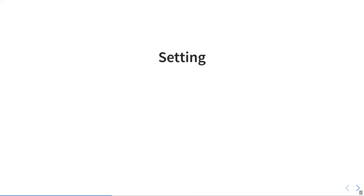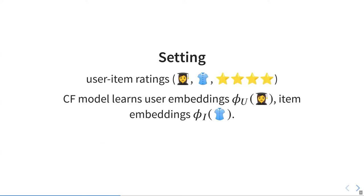To briefly describe the setting, first of all, we assume we have user item ratings. This user previously rated this button down shirt with four stars, for example. We assume we have some collaborative filtering model that learns a user embedding function phi u and an item embedding function phi i. This collaborative filtering model can be trained using matrix factorization or dual encoder model. We are agnostic to this exact specification. All we need is this user embedding and item embedding function.